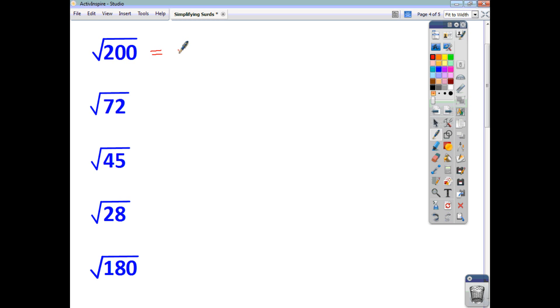Let's have a look at this first one. Square factors of 200, well, that's going to be 100 times 2. Which is root 100 times root 2. Root 100 is 10. So it's 10 root 2. That's your final answer.